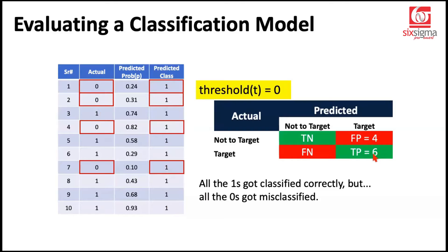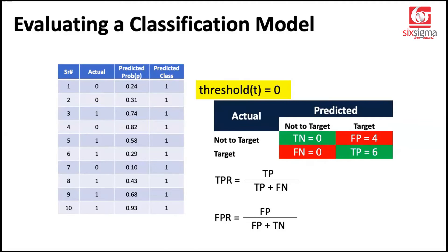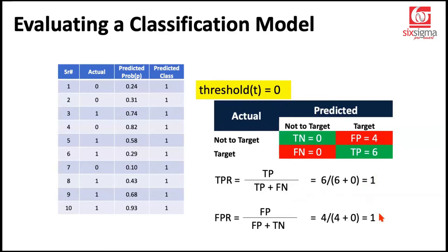If we look at the counts, actual ones were 6 and false positives are 4. True negatives and false negatives will both be zero. True negatives occur only when we identify a zero correctly, but since we never predicted any zero, we won't identify any zero correctly. And false negatives occur when a one is called a zero, but we never said anything is zero. So both values are zero. Calculating TPR and FPR gives us both as 1, or 100%, when the threshold is 0.